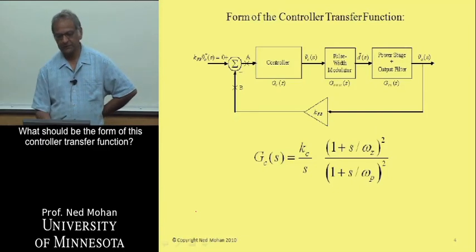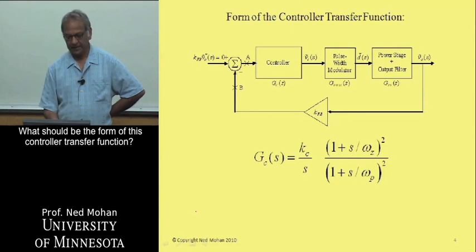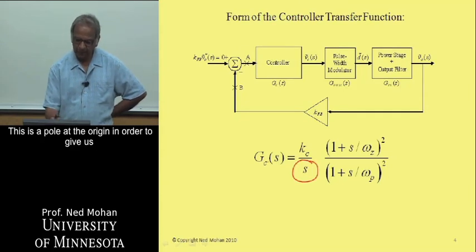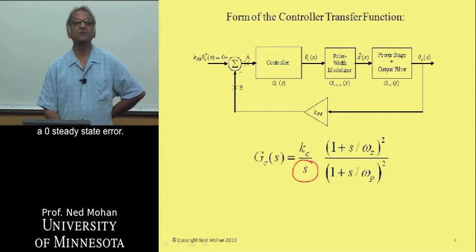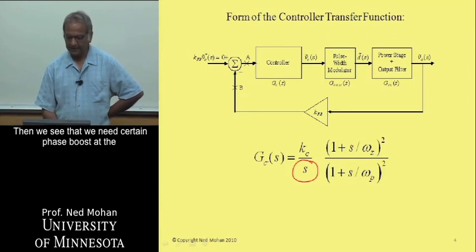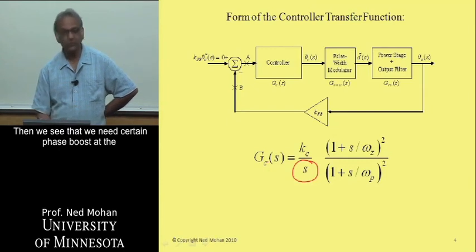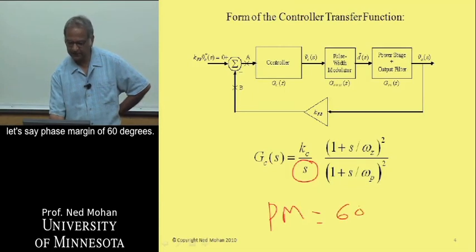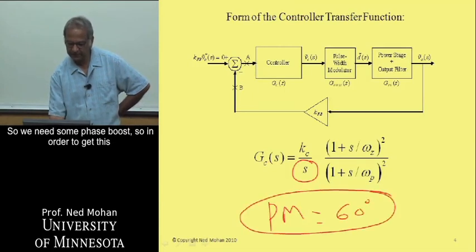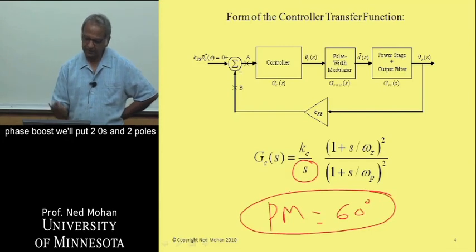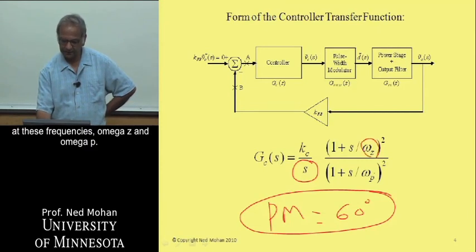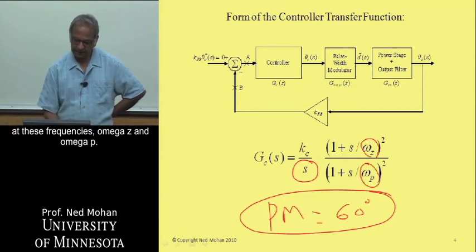What should be the form of this controller transfer function? We'll select it to have a pole at the origin in order to give us zero steady-state error. We'll also see that we need certain phase boost at the crossover frequency to get the desired phase margin of 60 degrees. To get this phase boost, we'll put two zeros and two poles at frequencies omega Z and omega P.